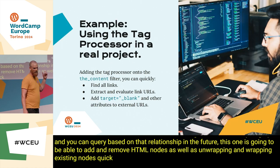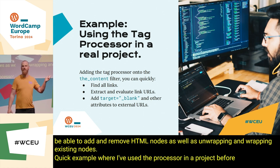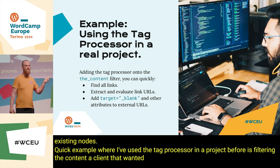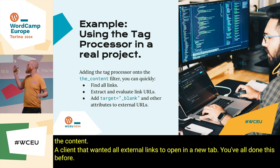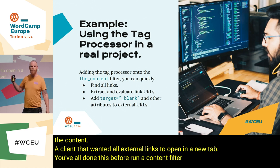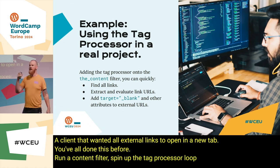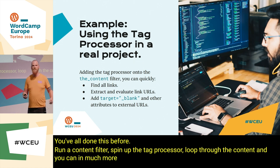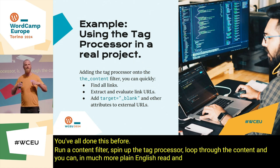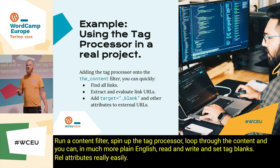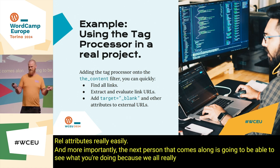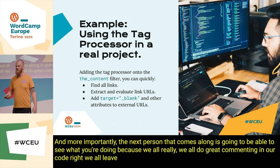A quick example: where I've used the tag processor in a project is filtering the content for a client who wanted all external links to open in a new tab — you've all done this before. Run a content filter, spin up the tag processor, loop through the content, and you can, in much more plain English, read and write and set target blanks and rel attributes really easily. And more importantly, the next person that comes along is going to be able to see what you're doing — because we all leave spectacular comments in our code every single time. No. Verbose code is always easier to read.